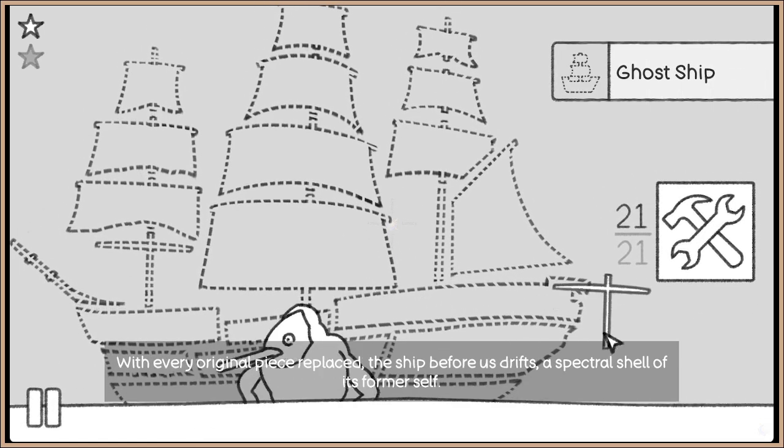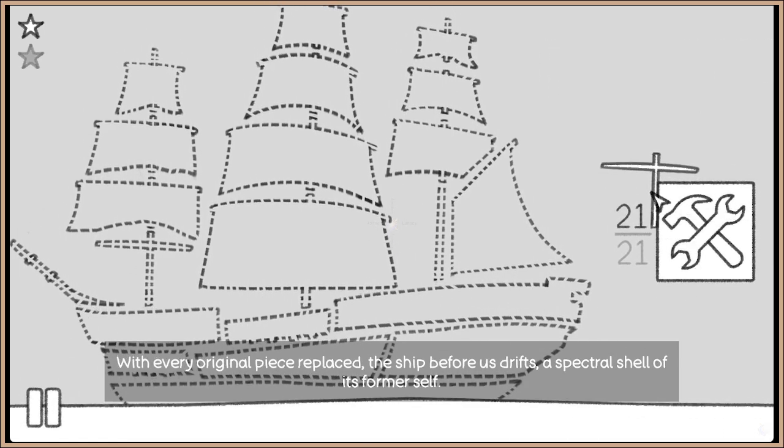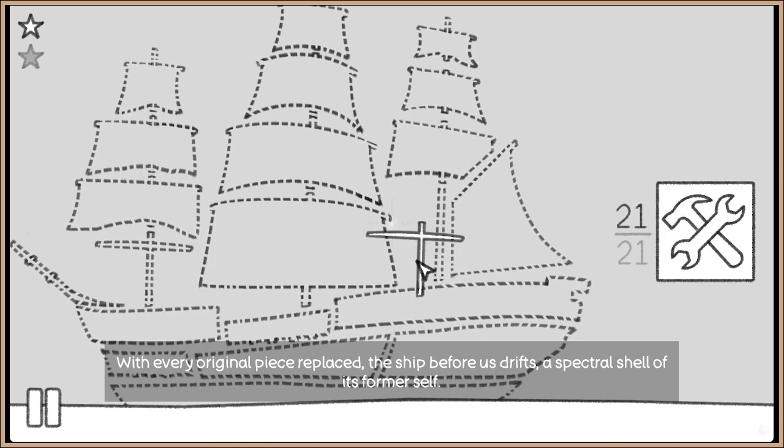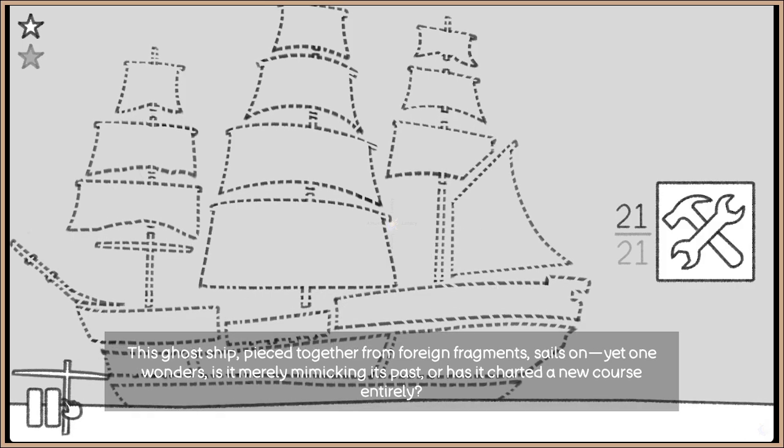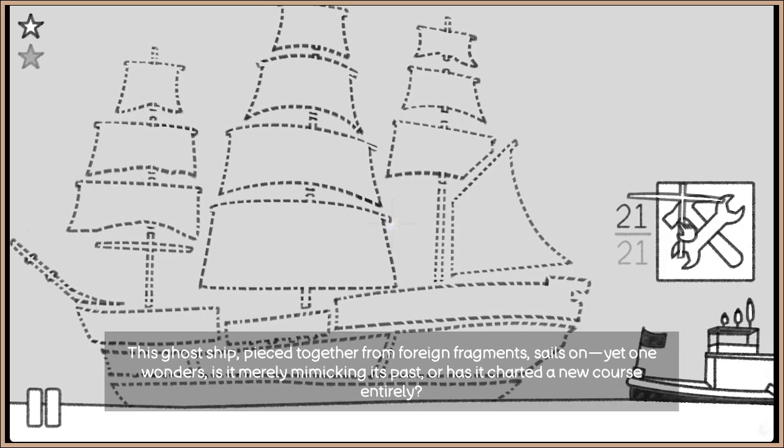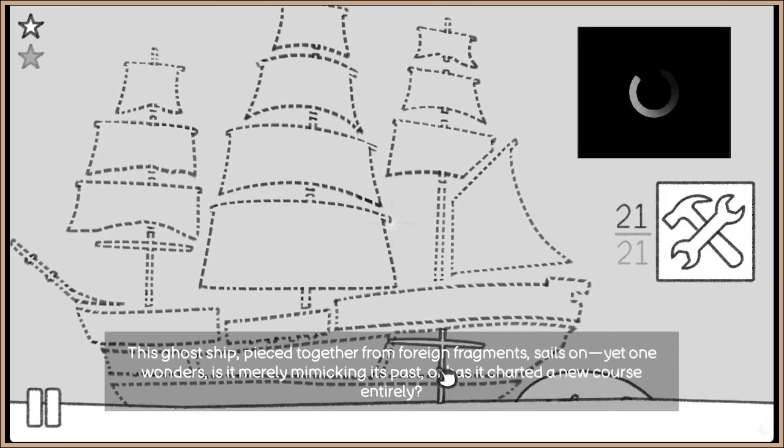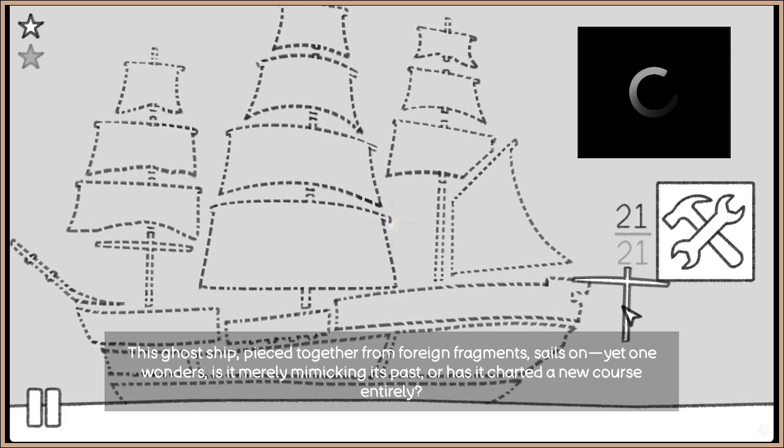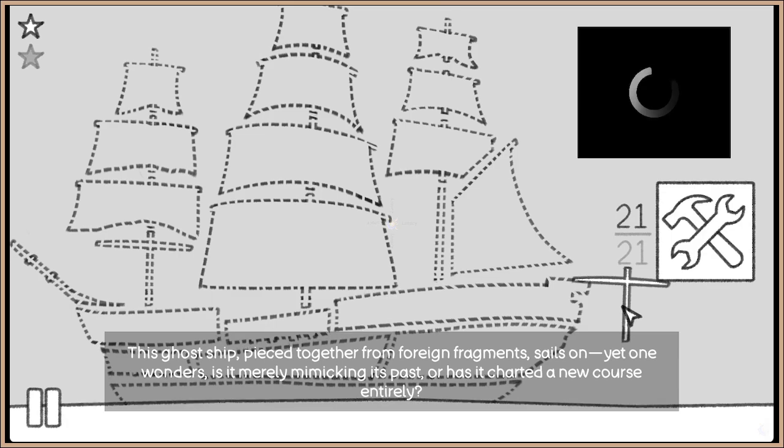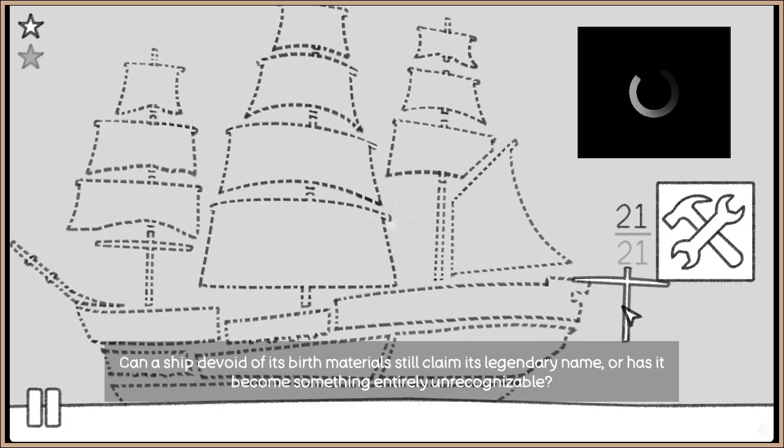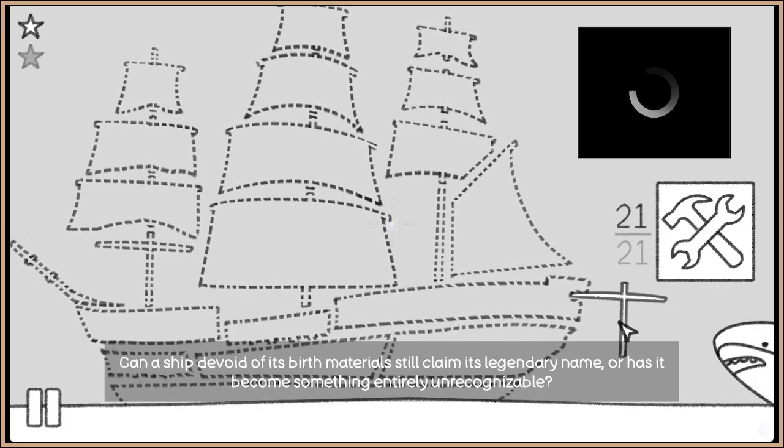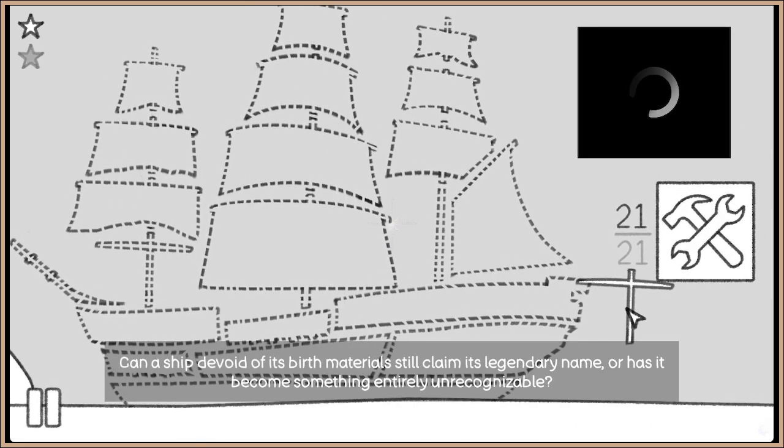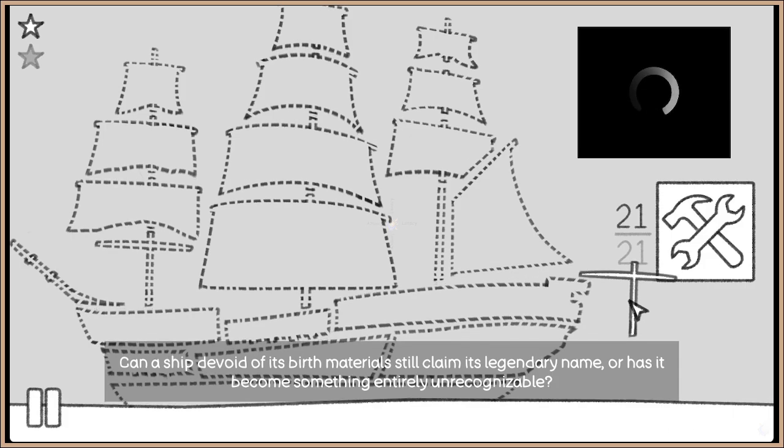With every original piece replaced, the ship before us drifts. A spectral shell of its former self. This ghost ship, pieced together from foreign fragments, sails on. Yes, one wonders. Is it merely mimicking its past? Or has it charted a new course entirely? Can a ship, devoid of its birth materials, still claim its legendary name? Or has it become something entirely unrecognizable?